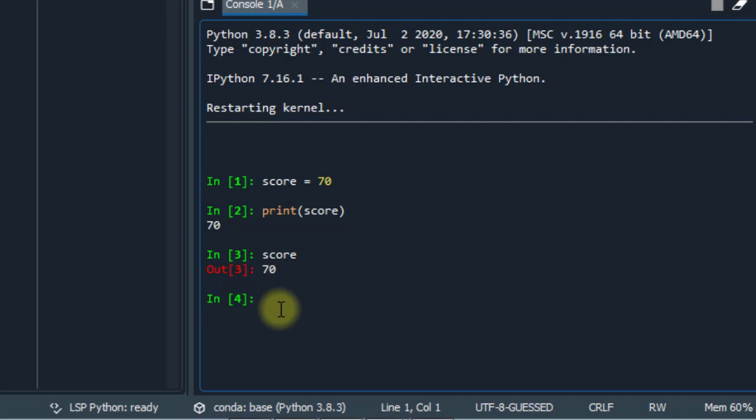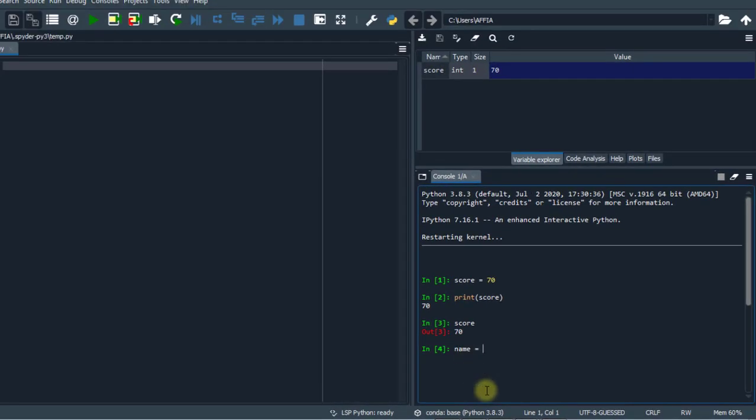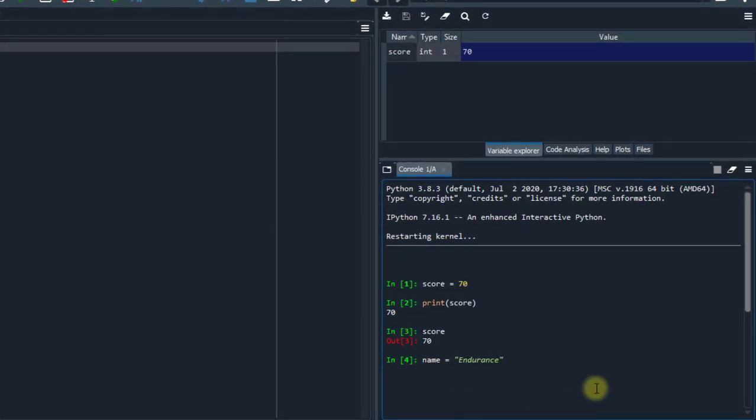And then again, we could store a name string in a variable. So let's see how that is done. I'm going to have name. This name is my variable name. And I'm going to store a string. I'm going to name it endurance. Now you notice in variable explorer that we have the variable name over here. And we have the type, showing us the type of variable. And showing us the size. And over here we can see the value. So I have name and I have score. Name is a string and score is an integer.